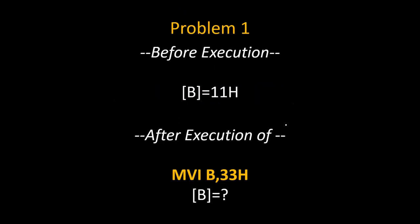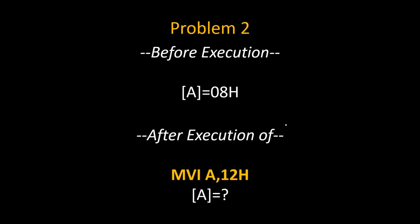Here are some practice problems for your better understanding. Problem one: before execution, if the content of the B register is 11H and we execute MVI B, 33H, what will be the new value of the B register after execution? Problem two: before execution the accumulator was holding 0AH, and after execution of MVI A, 12H, what will be the new value of the accumulator? I hope this was useful. Thank you everyone for paying attention.